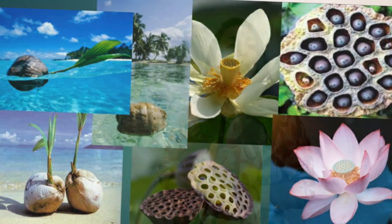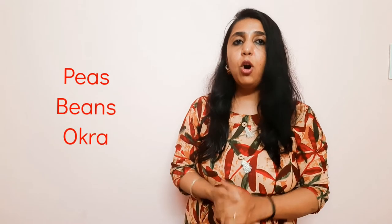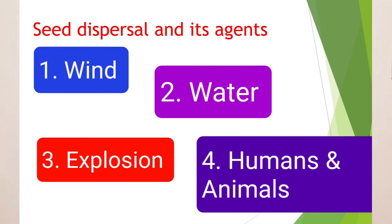Coming to the third agent — dispersal by explosion. Some fruits like peas or beans burst when they are fully ripened. In such a condition, when they burst with full energy, the seeds in those pods go far from the parent plant.